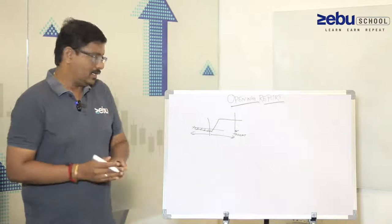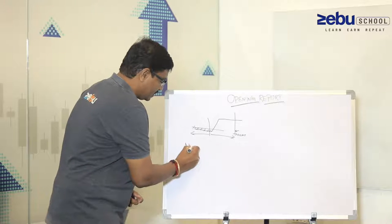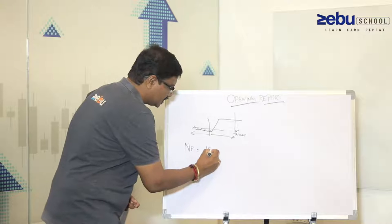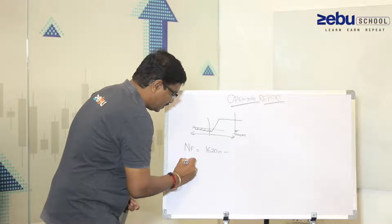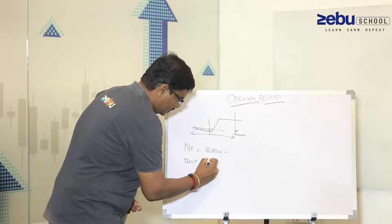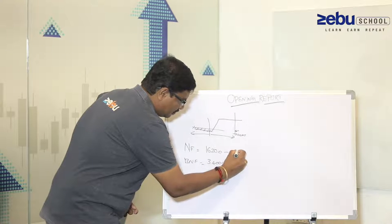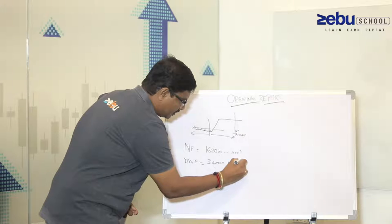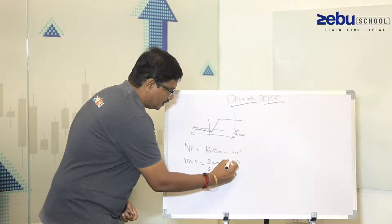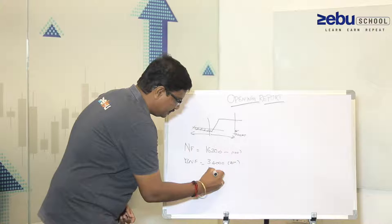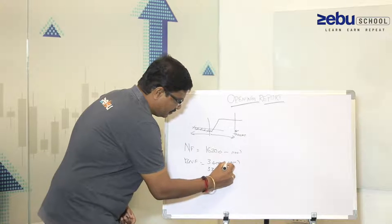For Nifty, the levels will be around 16,200. For Bank Nifty, the long-term support I expect is around 34,000. You can add 100-point cushion on the downside, so 33,800 to 34,000 is the long-term support. Just open your higher timeframe chart and look into it.